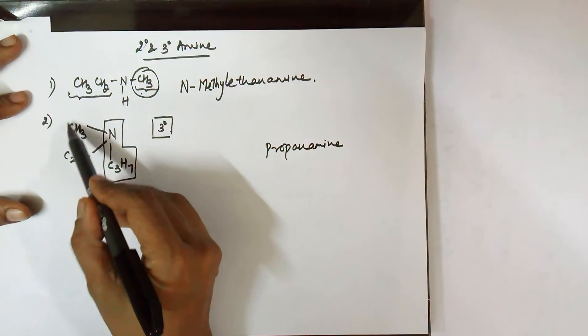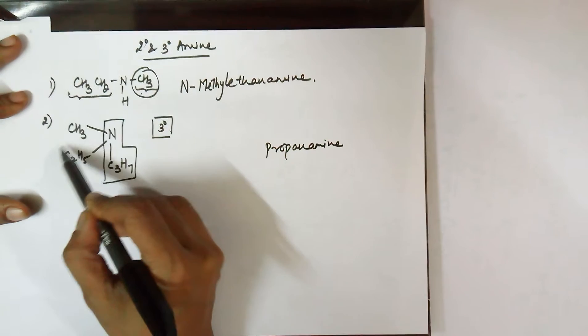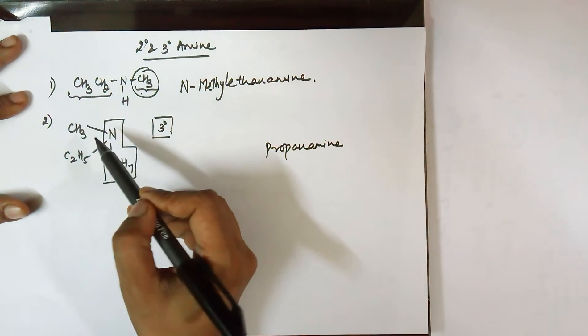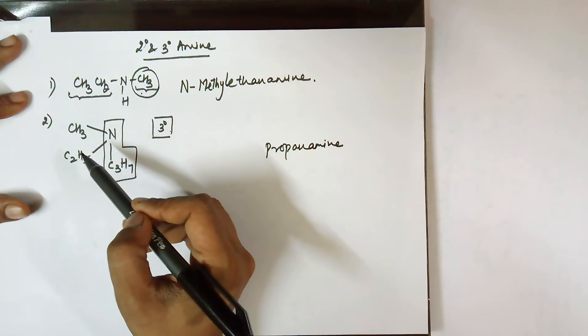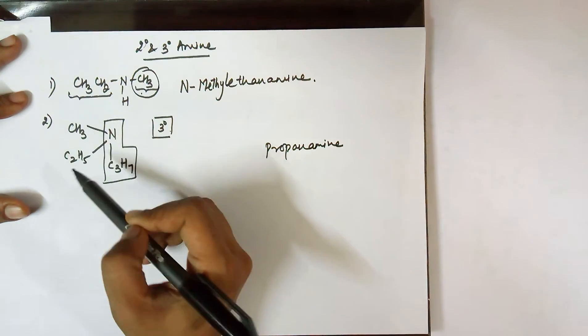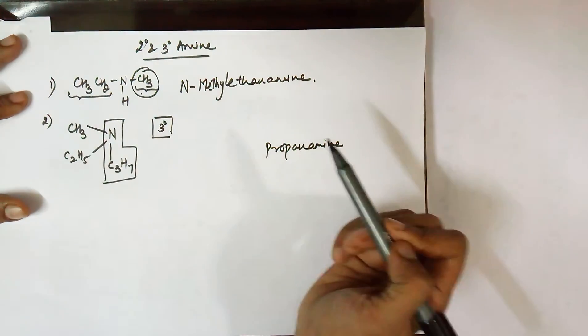You've got a methyl group attached to nitrogen, ethyl group attached to nitrogen. So you need to write these positioning as N-methyl, N-ethyl, and then followed by propanamine.